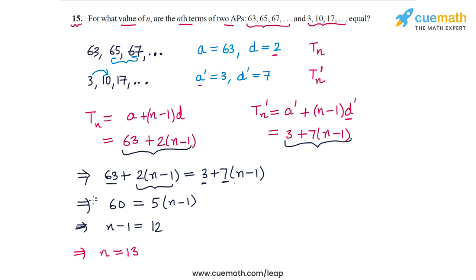So the thirteenth term of both APs will be equal. And if you want, you can verify this. So the thirteenth term of the first AP will be T13, which will be the first term 63 plus (n-1), so that's 12 into D is 2. So 12 into 2 is 24. So this is the thirteenth term of the first AP.